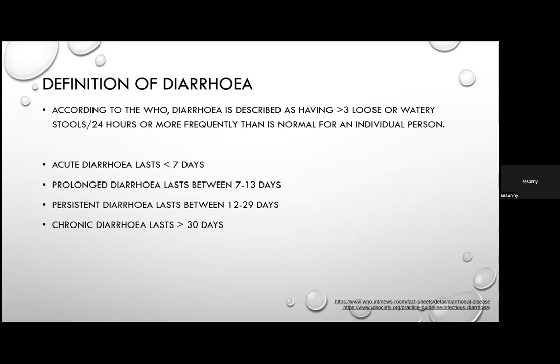Diarrhoea can also be classified by duration. Less than seven days is acute diarrhoea; seven to 13 days is prolonged; between 12 and 29 days is persistent; and diarrhoea lasting more than 30 days is classified as chronic.